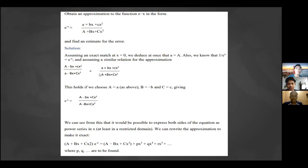From this, if we choose a = A as above, B = -b, and C = c, giving this equation: e^(-x) ≈ (A - bx + Cx²) / (A + Bx + Cx²).